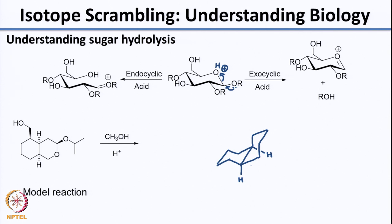Now let us put the substituents. From the ring junction at the 1, 2, 3 position, I have an OR group going up - I will write it like this. At the adjacent position, I have a CH2OH group also going up. So this is what the conformation looks like for the molecule. This was chosen as the model reaction. Now let us write the mechanism, since we are doing endocyclic as well as exocyclic hydrolysis in the presence of methanol.